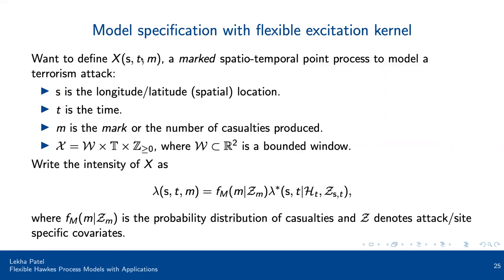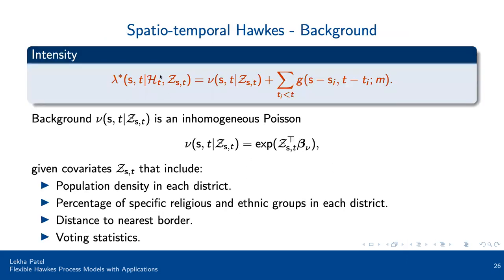We defined a marked spatial-temporal point process XSTM for each terror attack, where S is the latitude-longitude location, T is the time, and M is the mark — the number of casualties from that attack. We wrote the intensity of X as lambda: the Hawkes conditional intensity function at the space-time location of an attack given its history and spatial-temporal covariates, weighted by a probability density function of casualties or marks. We looked at the extreme behavior of marks and the risk each attack poses to society.